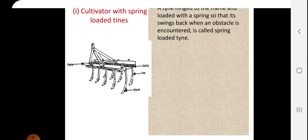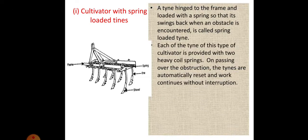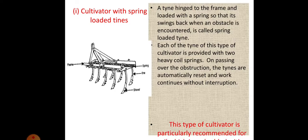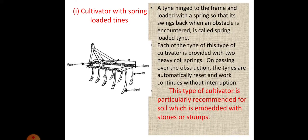A tine connected to the frame and loaded with a spring so that it springs back when an obstacle is encountered is called a spring-loaded tine. Each tine of this type of cultivator is provided with two heavy coil springs. On passing over an obstruction, the tines are automatically reset and work continues without interruption. This type is particularly recommended for soil embedded with stones or stumps.